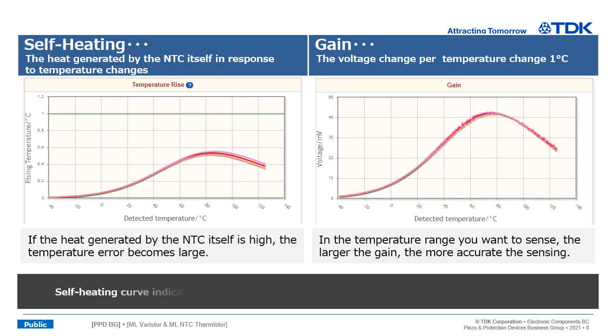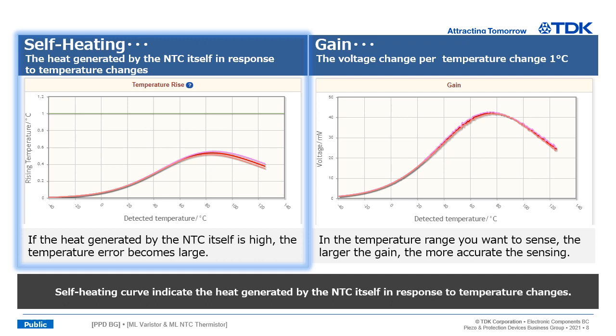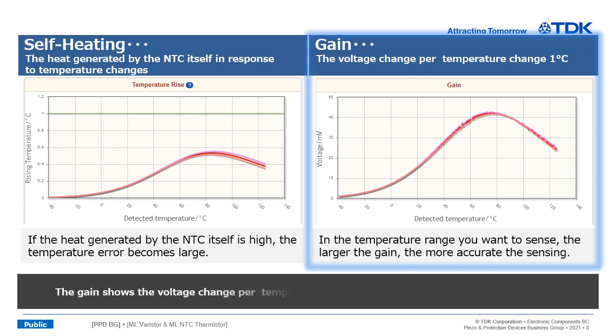Self-heating curve indicates the heat generated by the NTC itself in response to temperature changes. The gain shows the voltage change per temperature change 1 degree Celsius.